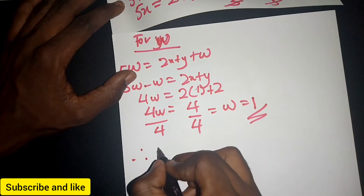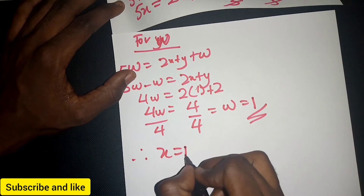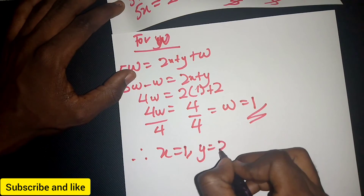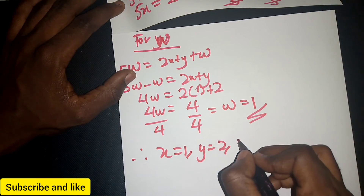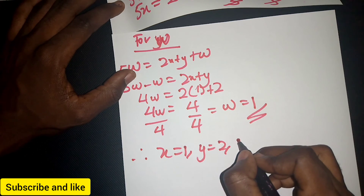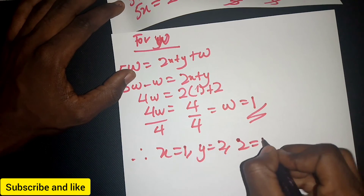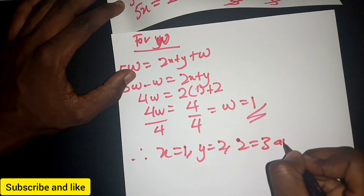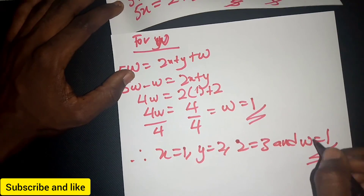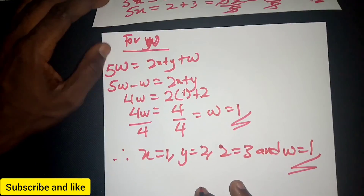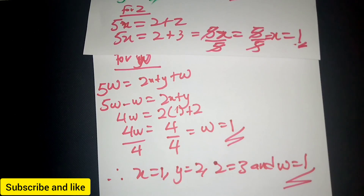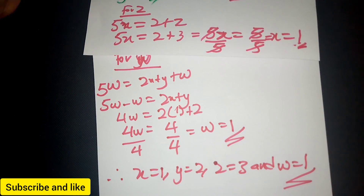So therefore, x = 1, y = 2, z = 3, and w = 1. Thank you very much, and I will see you in another section.